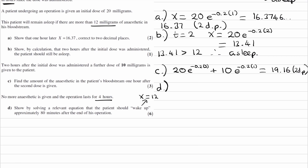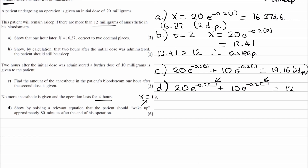We have the two doses: 20 e to the minus 0.2 times some time, plus 10 e to the minus 0.2 times another time, all equal to 12. We're not putting in a time — we're trying to work out a time. We need a function of T in both boxes, but we can't put the same T in both, because there is a time difference between when the two doses were administered. Think about what variable to use, then solve for that value of time.